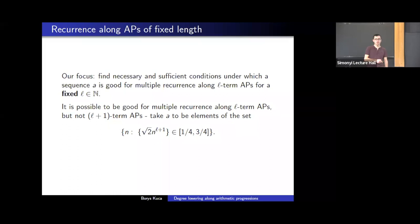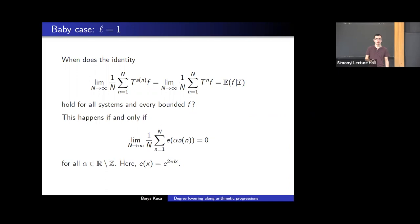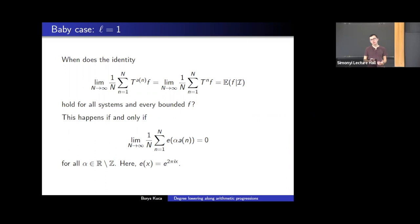To see what happens, let's look first at the baby case where we just have a single average. In this case, we want two limits to be equal, which by the mean ergodic theorem means we want this average to converge to the conditional expectation of the invariant factor. When does this hold for all systems and all bounded functions? It's an easy consequence of the spectral theorem that this happens if and only if a certain exponential sum goes to zero for all irrational values alpha.